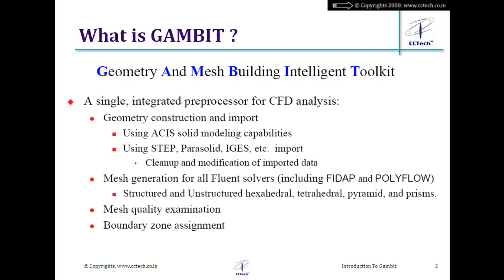Once we are happy with the mesh quality, we apply boundary zones. Those zones will be visible in Fluent, making it easy to set up the solution. The last stage in GAMBIT is applying the boundary zones; once everything is ready, we can take that mesh to different solvers, one of which is Fluent.